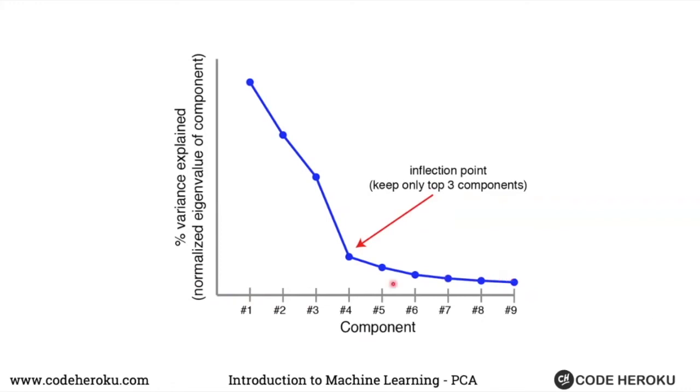This is very similar to the elbow chart that we saw for KNN. At this point, we say, okay, it doesn't help anymore. After this point, we are not capturing enough variation in our data. We can, in this case, select four principal components, or we can just keep top three components over here.